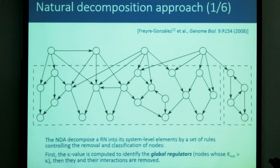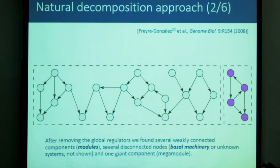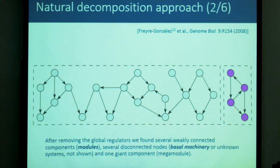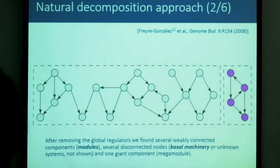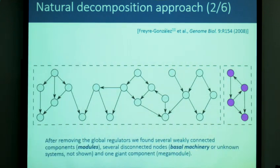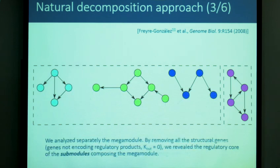Going back to the network, if we remove the global regulators, we have some weakly connected components or modules. We have a large connected component, which we call a mega-module, and some disconnected nodes that we later found are the basal machinery of the cell. To study this mega-module, we remove all the structural genes — genes not encoding for regulatory products.